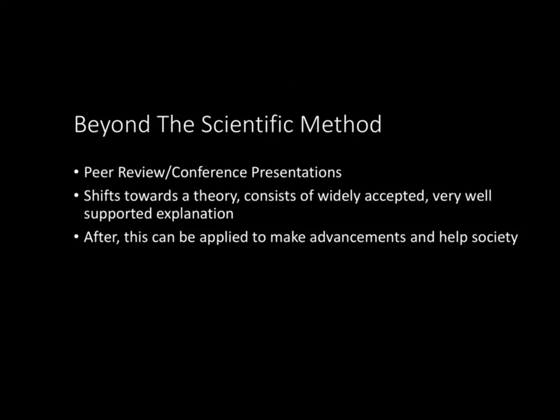Beyond the scientific method, it continues to include a few more main areas. In the peer review process, scientists give their work to another group of scientists to evaluate the quality. They also present the work at conferences to gain feedback. Eventually, if validated, the work could mold into a theory, which is a widely accepted, well-supported explanation of an issue. From here, said work could be applied to make advancements used in modern society.